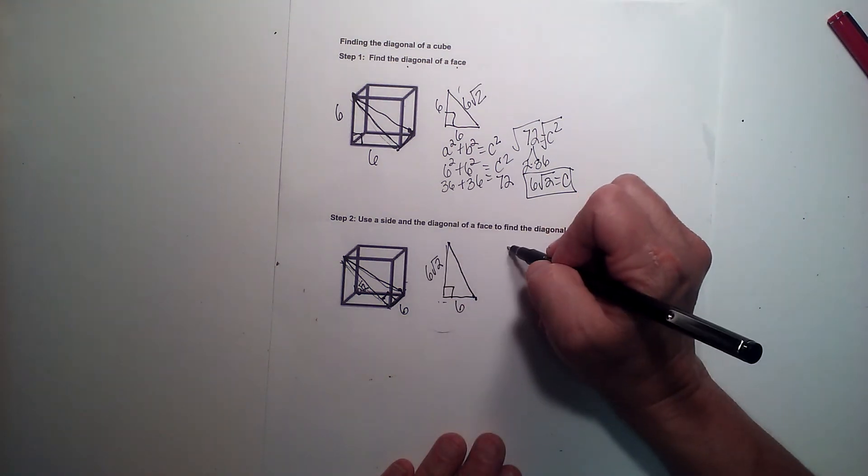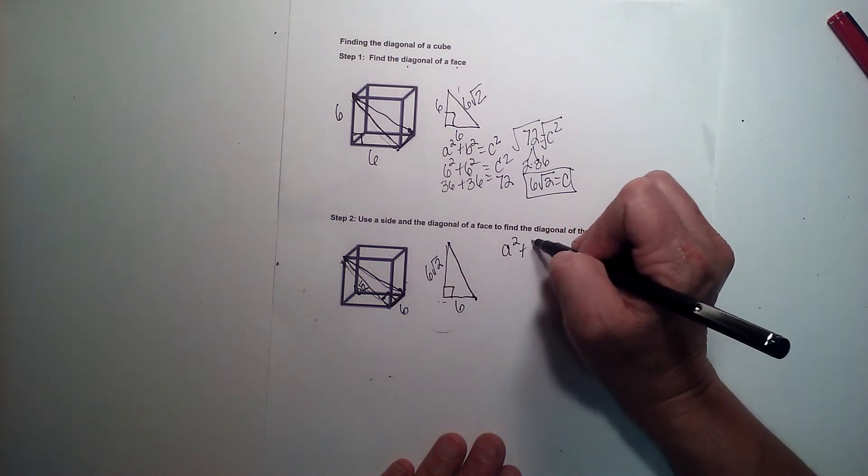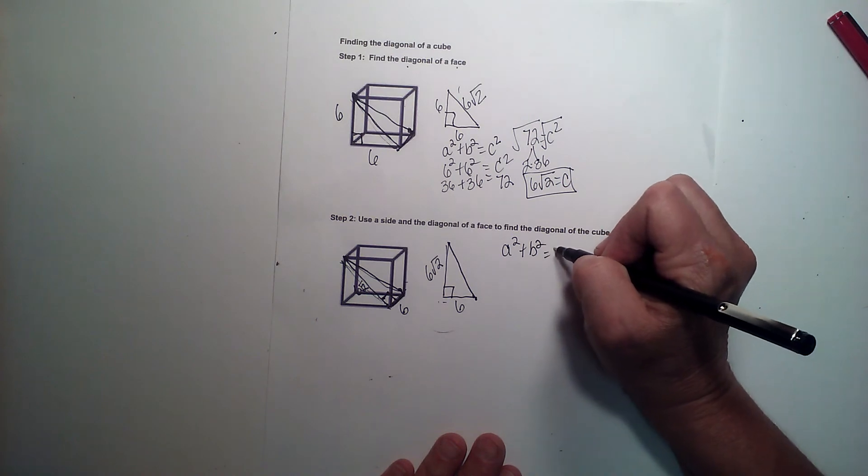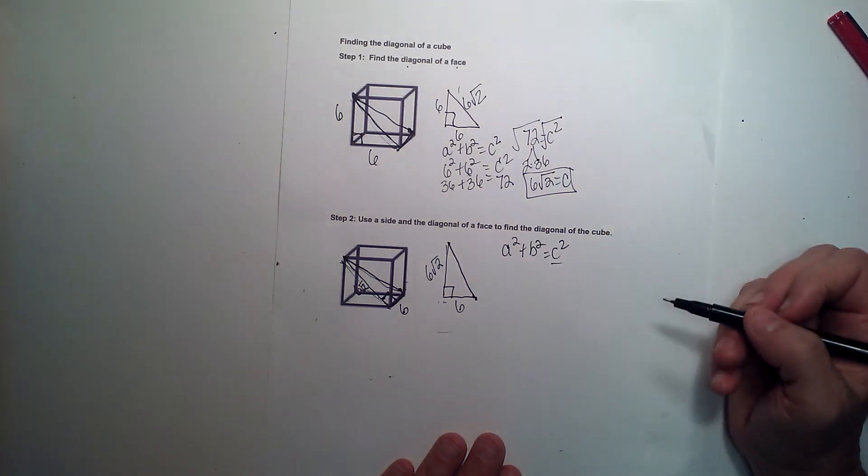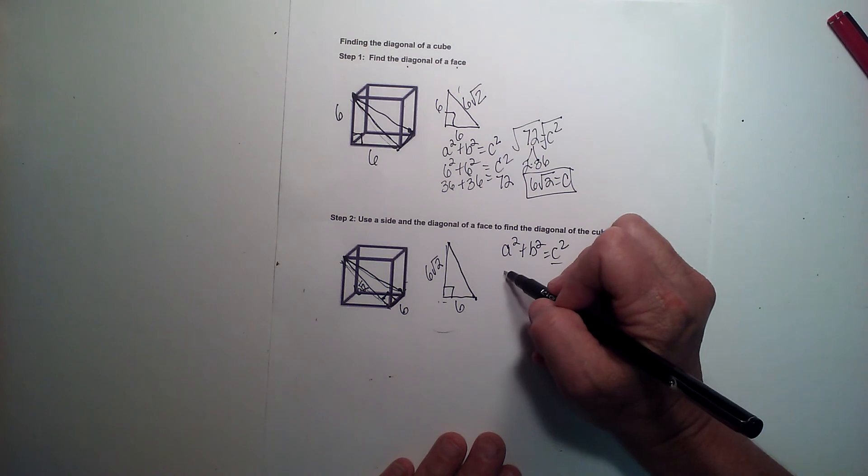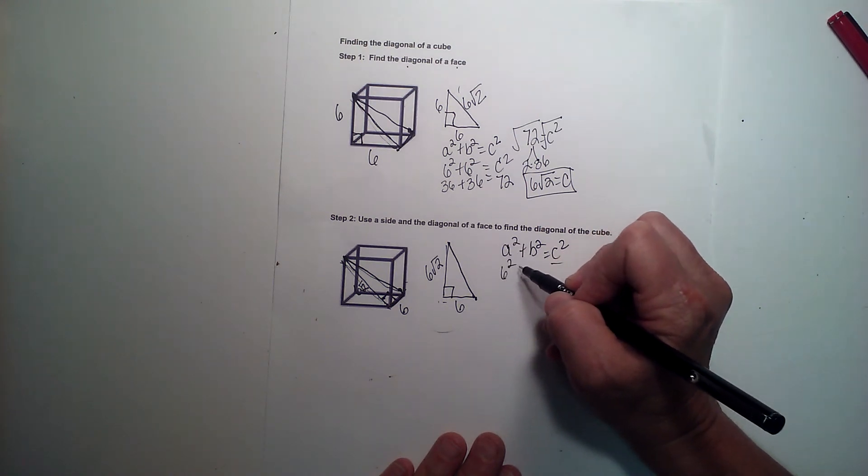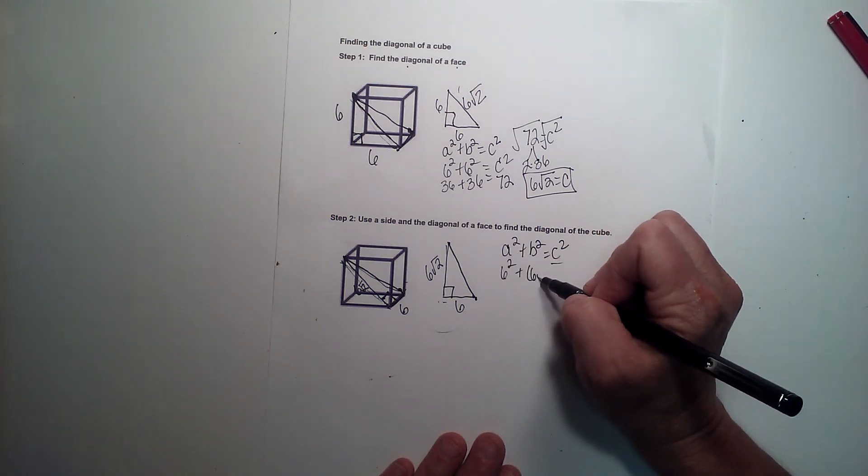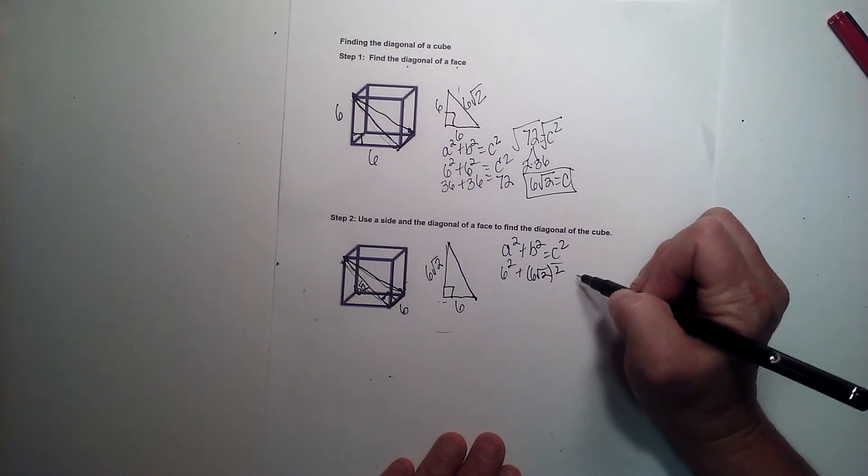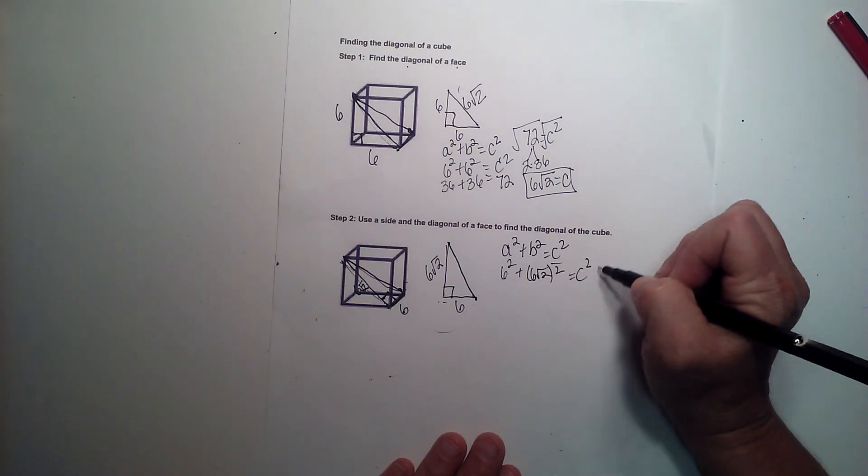So now again, we just use Pythagorean theorem, a squared plus b squared equals c squared to find the length of the hypotenuse. But this time, our legs are 6 and 6 square root 2. And let's solve for c squared.